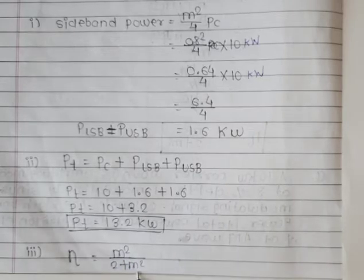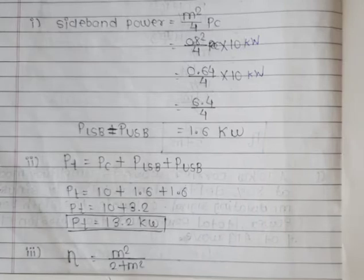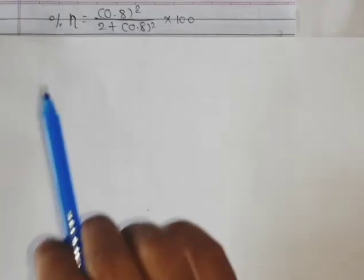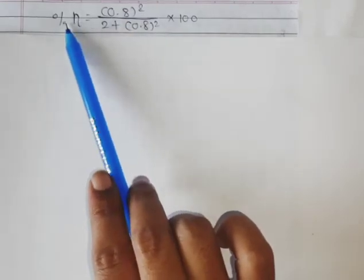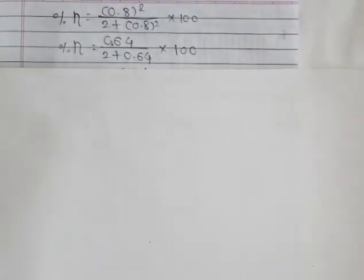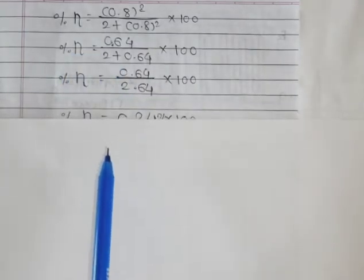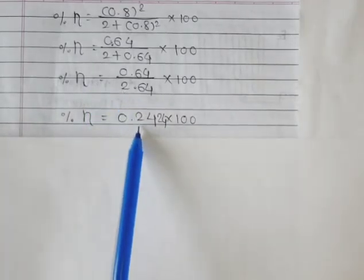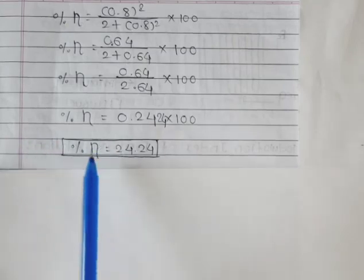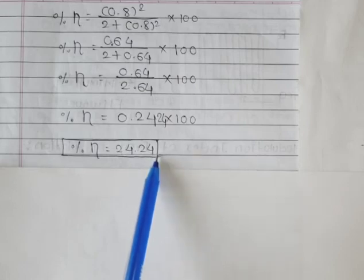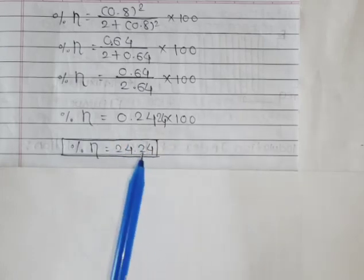To find transmission efficiency, the formula is m²/(2 + m²) × 100. Putting in the modulation index value m = 0.8: m² = 0.64, so efficiency = 0.64 / (2 + 0.64) × 100 = 0.64 / 2.64 × 100 = 0.2424 × 100 = 24.24%. So the transmission efficiency is 24.24%.